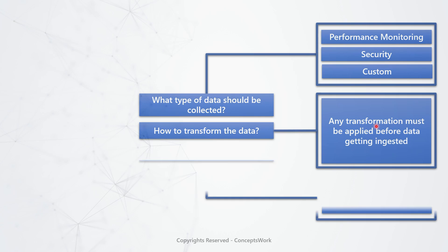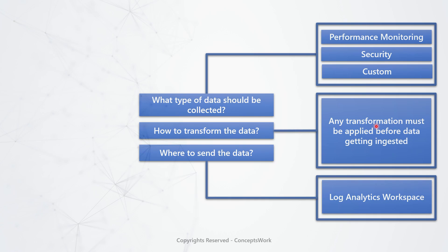The last question is: where exactly must a specific data type be ingested? For example, if you want to capture performance logs and security logs from a machine but need them ingested into different workspaces, this use case was referred to as multi-homing in MMA. However, it was a very big challenge, and for Linux machines it was not even supported. Whereas in AMA, it works so seamlessly that it will be the first thing you want to implement once I show you this in action.